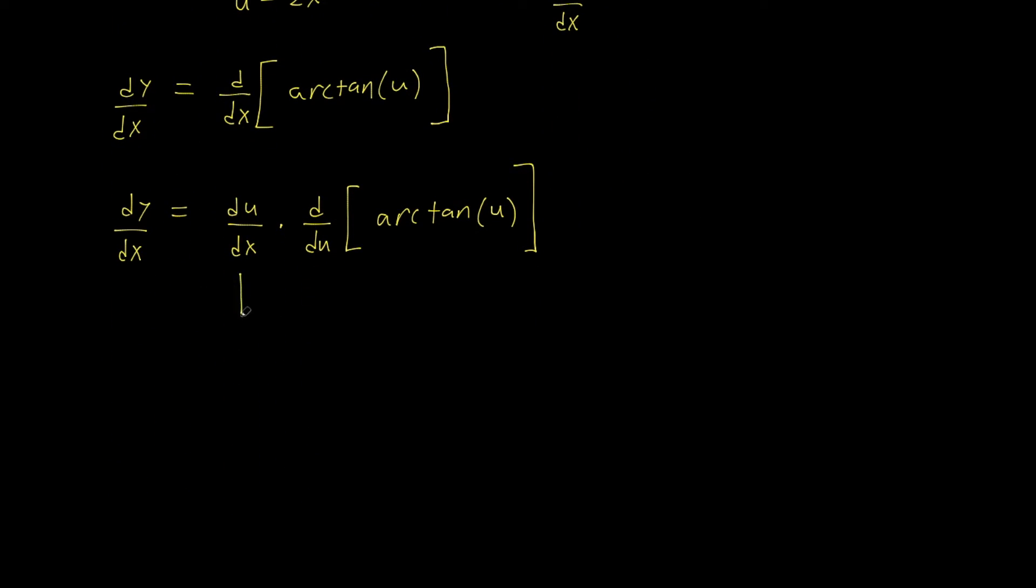So du/dx is equal to 2 times the derivative of arctangent of u with respect to u. We already solved that in the derivation video. So we have 1 over u squared plus 1.